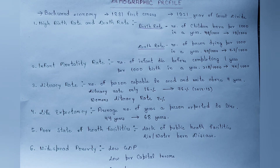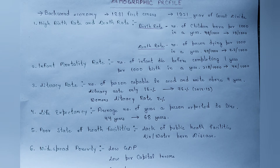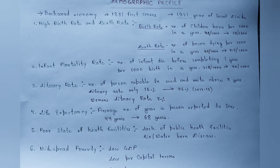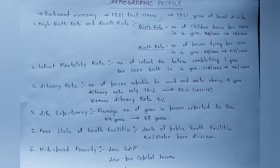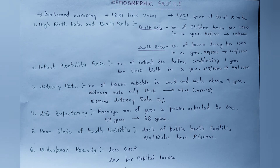Fourth feature है life expectancy — हम कितने साल expect कर सकते हैं जीने का। जो हमारा average year होता है, average number of years a person is expected to live, उसी को हम life expectancy कहते हैं। हमारा उस वक्त जो life expectancy था वो about 44 years था, और अभी हमारा 68 years है।